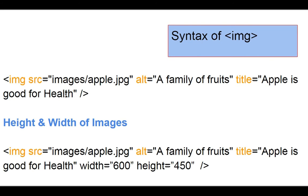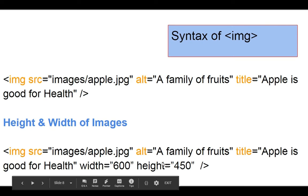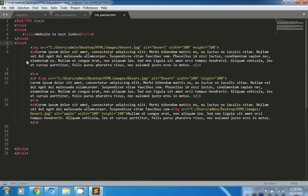The image tag is denoted by the IMG tag and has no closing tag. The 'src' attribute tells the browser where the image is located — for example, 'images/apple.jpg'. The 'alt' attribute is information about the picture, and 'title' gives more information about the image. You can also specify the height and width of the image to be displayed.